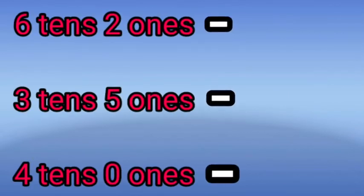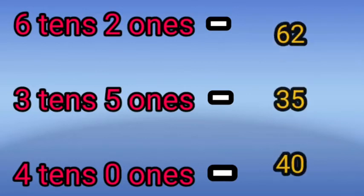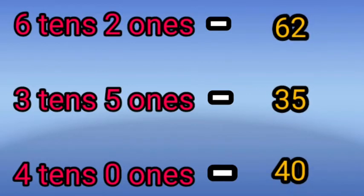Write the numbers: 6 tens and 2 ones — that's 62. 3 tens and 5 ones — that's 35. 4 tens and 0 ones — that's 40.